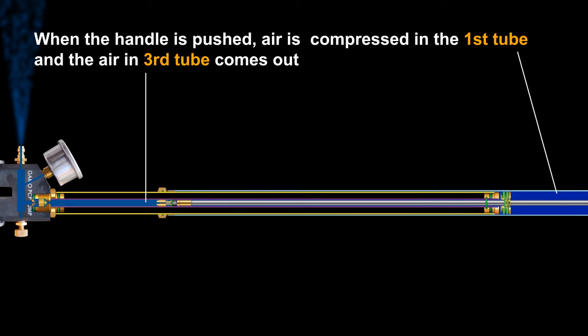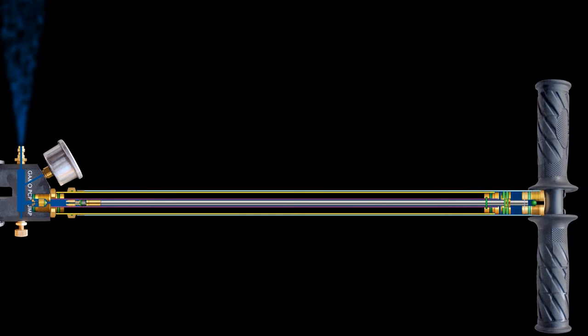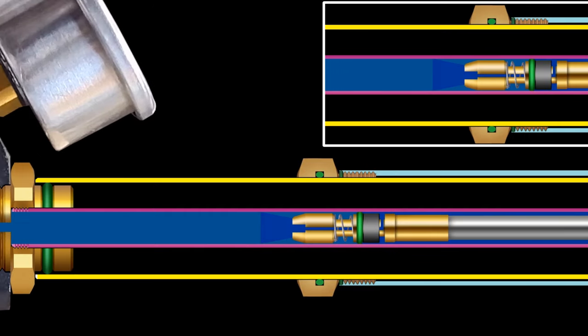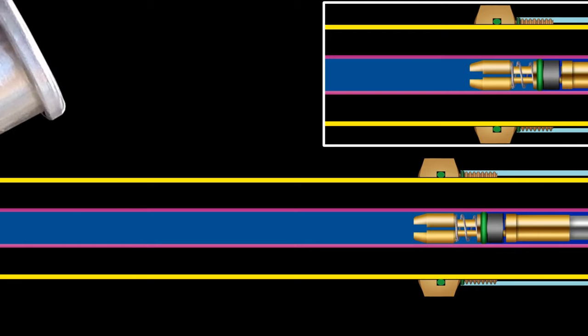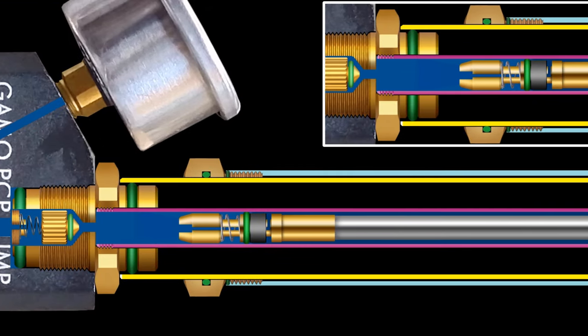First tube pressure keeps increasing. Both pressures remain separated until the pressure of the first tube pushes the seal. It opens the air passage again and all air is pushed out of the pump.